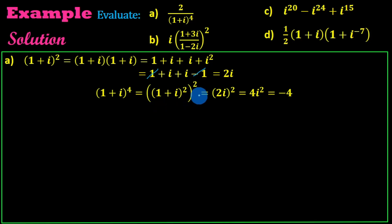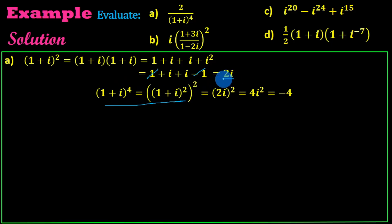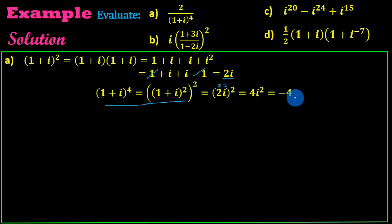The whole square — we multiply the square. 2i the whole square equals 4 times i squared, which equals 4 times minus 1, giving minus 4. So 2 over 1 plus i to the power of 4 equals 2 over minus 4.